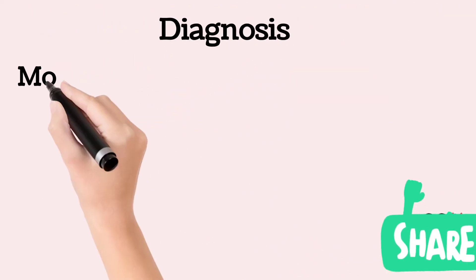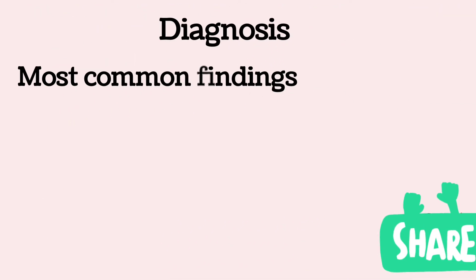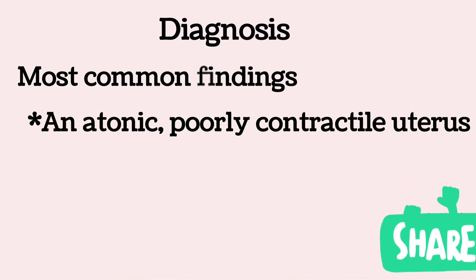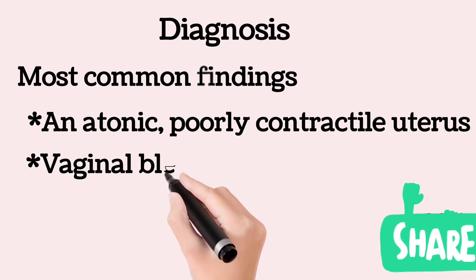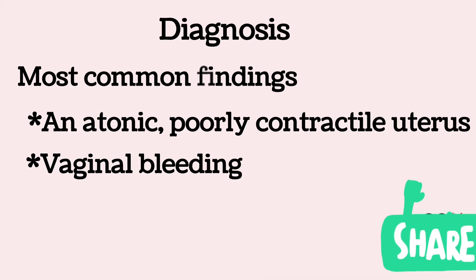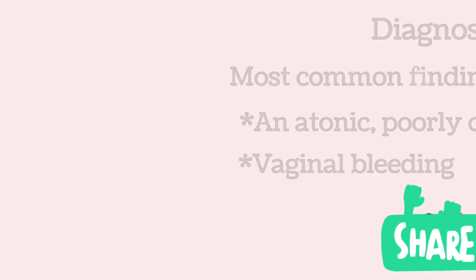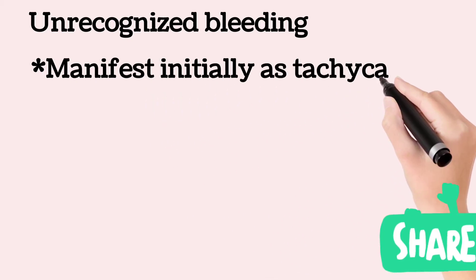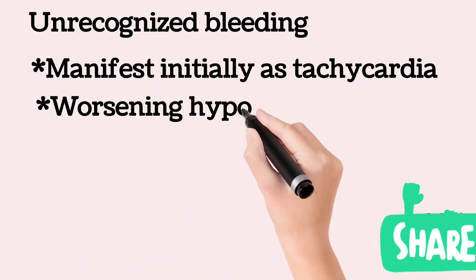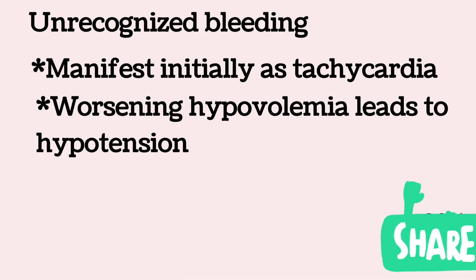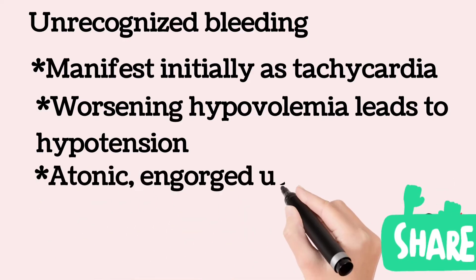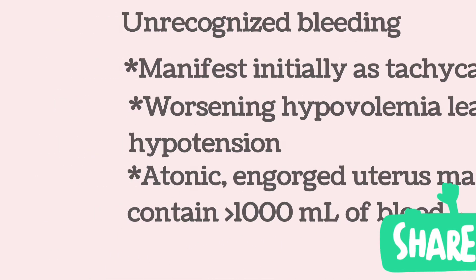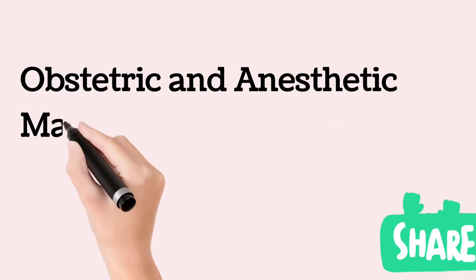An atonic, poorly contractile uterus and vaginal bleeding are the most common findings in patients with uterine atony. The absence of vaginal bleeding does not exclude this disorder because the atonic engorged uterus may contain more than 1000 ml of blood. Unrecognized bleeding may manifest initially as tachycardia, and worsening hypovolemia leads to hypotension.